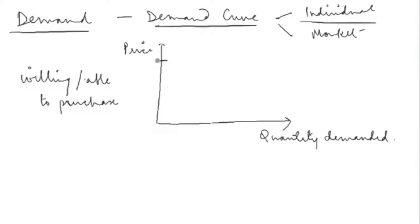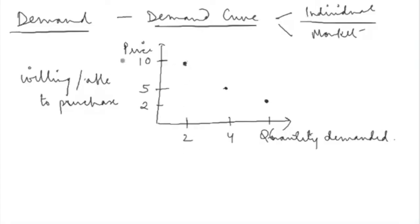Starting with the individual demand curve: if a commodity is priced at 10 rupees, I as a consumer am ready to purchase 2 units. If the price falls to 5, the commodity is cheaper and I'm ready to purchase more — say 4 units. If the price drops further to 2, I'm ready to purchase even more — say 6 units. These are three points at different prices. When I join all these points, the resulting curve is the demand curve.